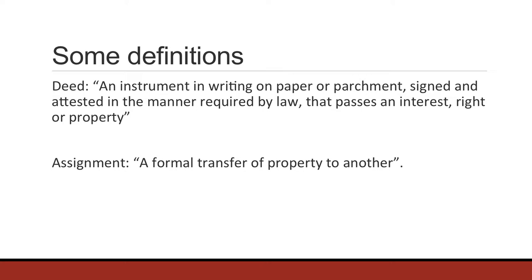Moving on to assignments of house claims. House claims are a little bit different from land claims. House claims are determined by EQC under Section 18 of the Earthquake Commission Act, and if they go over cap, by private insurance companies. So it's a hybrid model — you start off with EQC, then if it goes over cap, you're dealing with a private insurer. Between them, they make sure that homeowners receive their full entitlements.